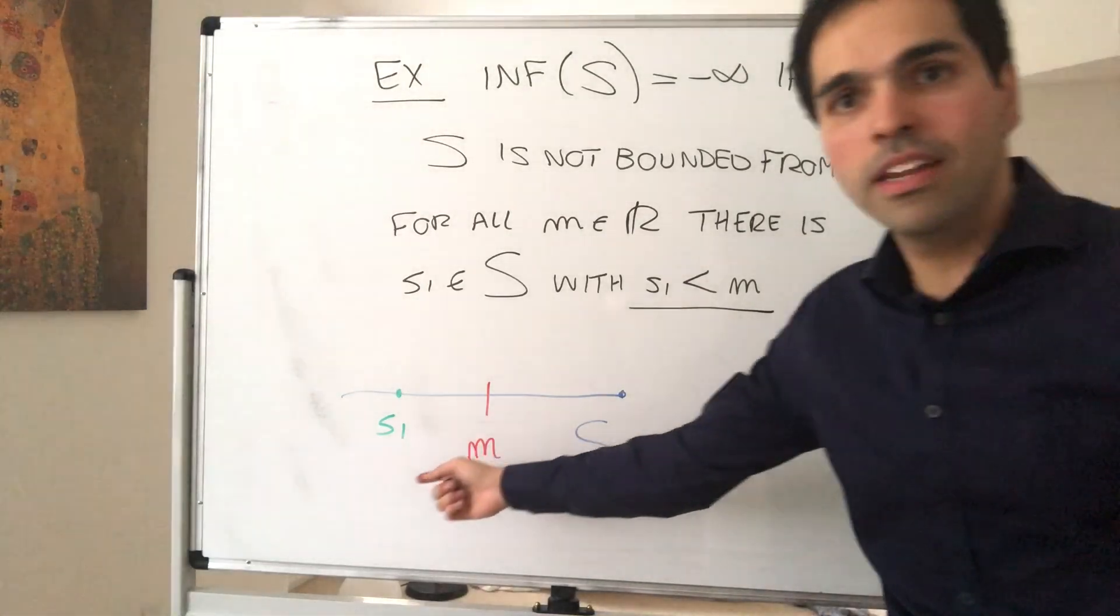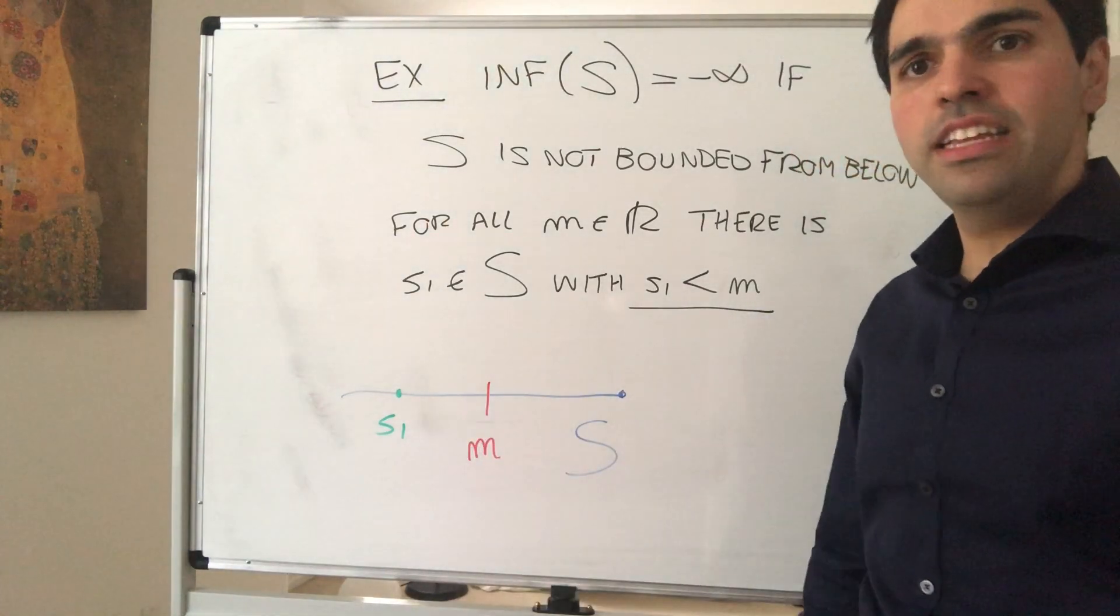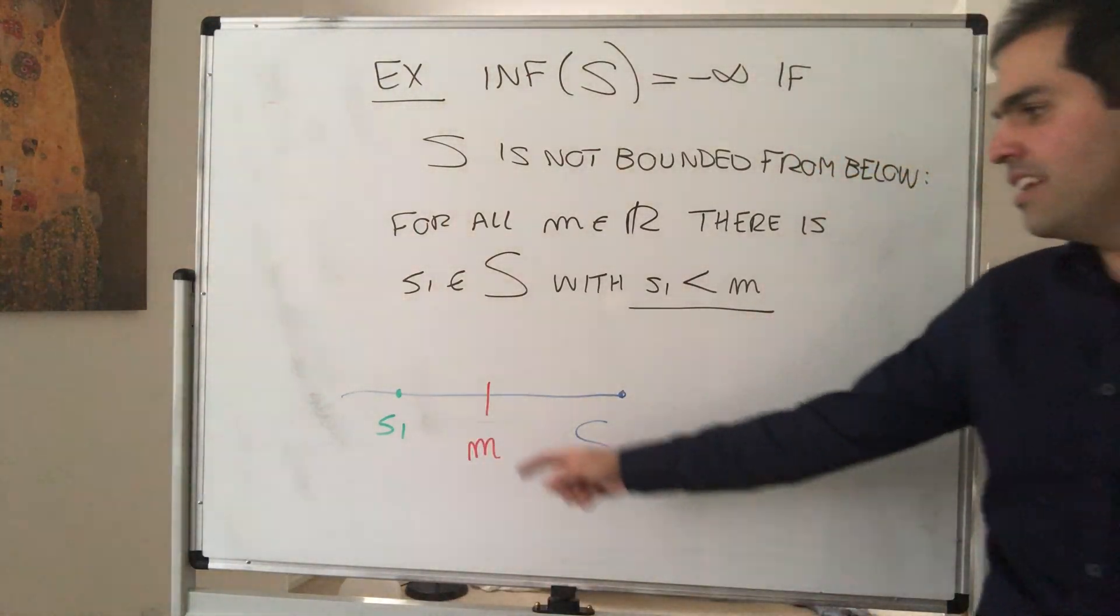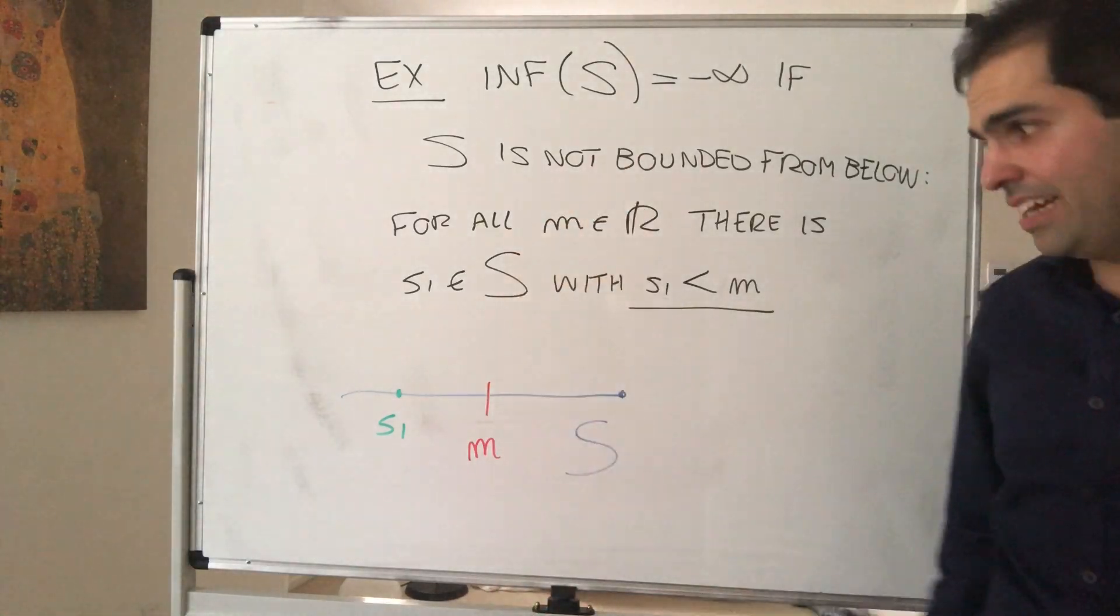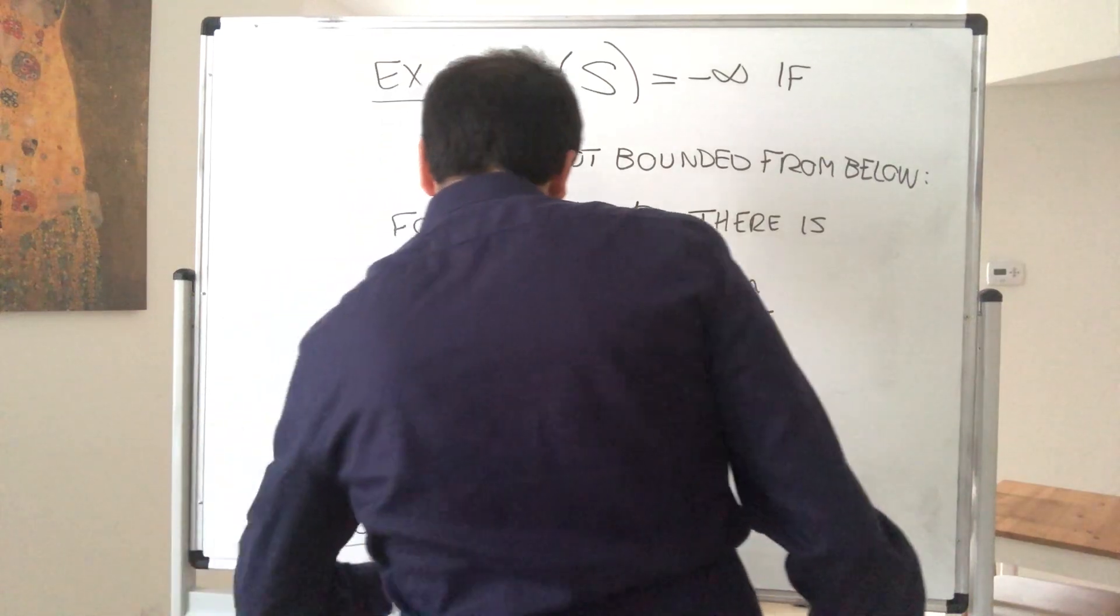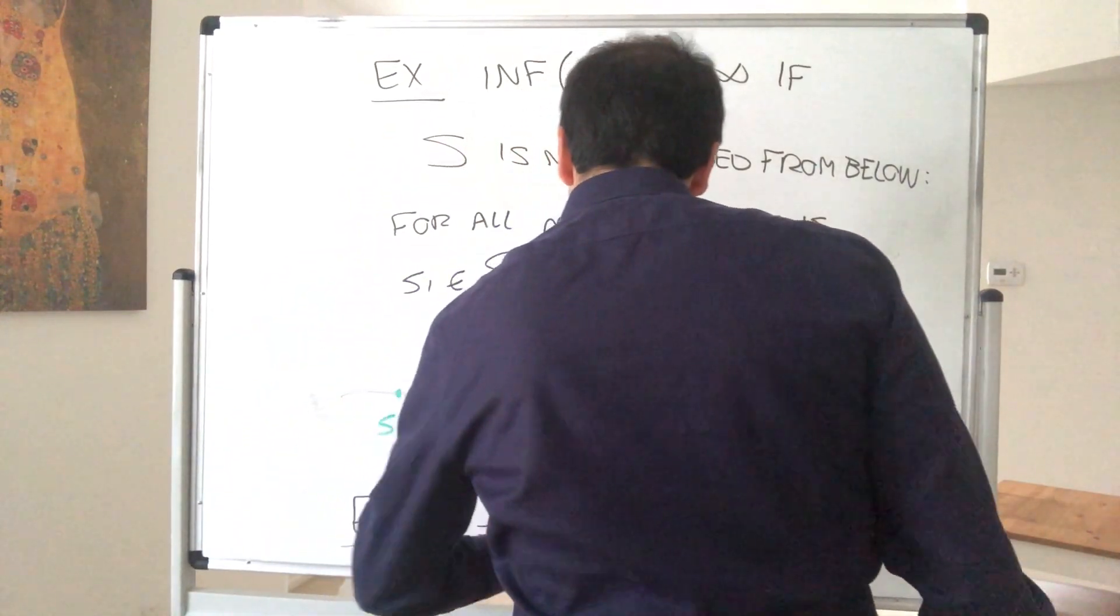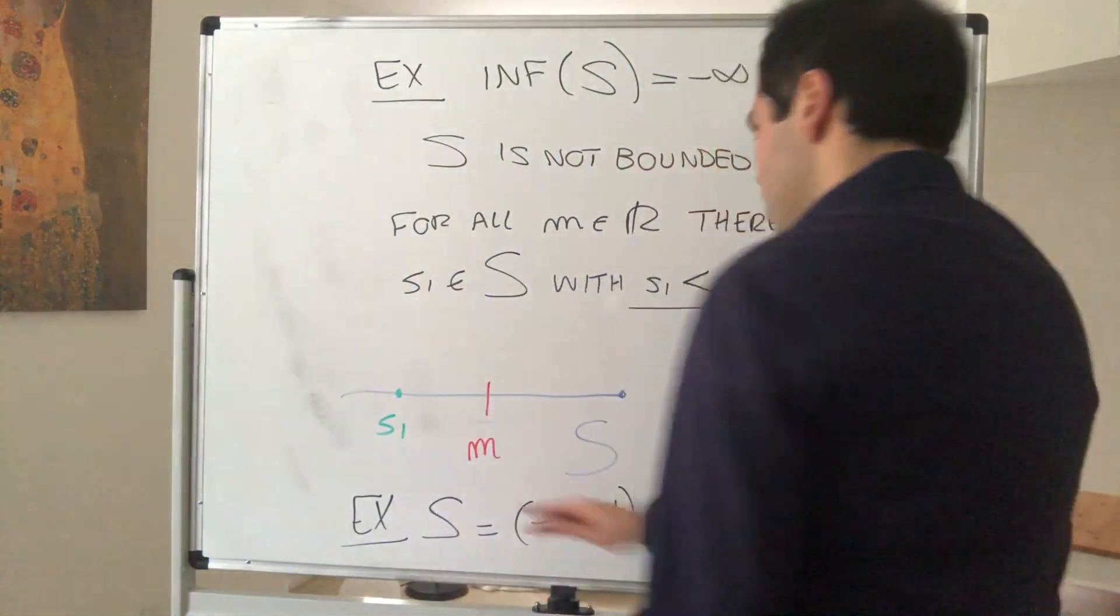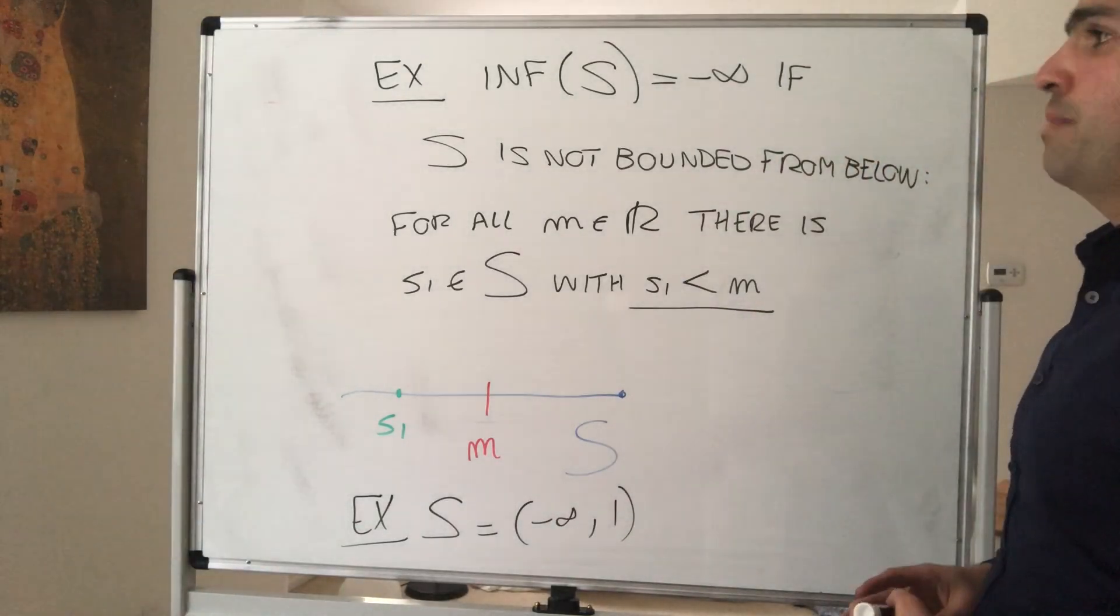So is there an element less than minus a million? Yes. Is there an element less than minus a billion? Yes. So for instance, again, this set minus infinity comma one, the infimum is minus infinity.